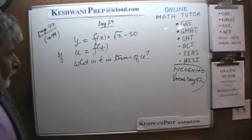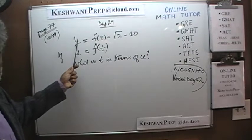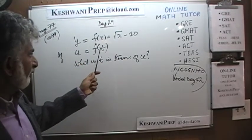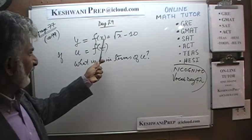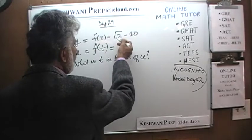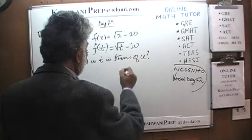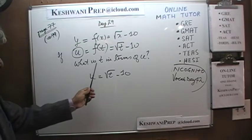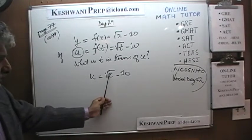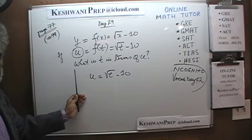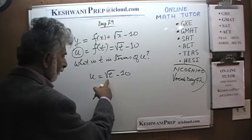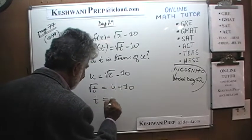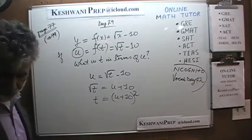Very simple, straightforward problem. Instead of expressing the function in terms of x and y, they want us to rewrite the function in terms of t and u. Wherever we see x in the function, we simply replace it with t. Now we have u equals the square root of t minus 10. They want t in terms of u, so let's solve for t. Bring the 10 to the other side: square root of t equals u plus 10. Therefore, t equals (u plus 10) squared.